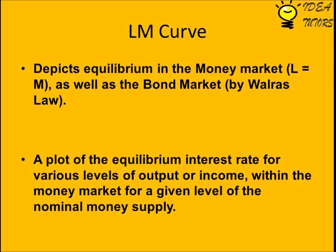The LM curve depicts equilibrium in the money market (L equals M) as well as the bond market, by Walras' Law. It is a plot of the equilibrium interest rate for various levels of output or income within the money market, for a given level of the nominal money supply.